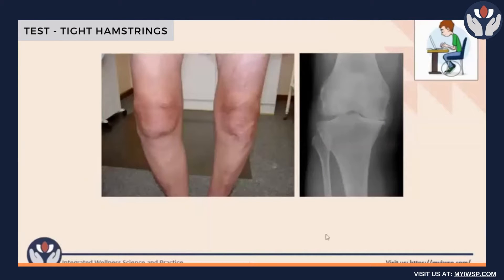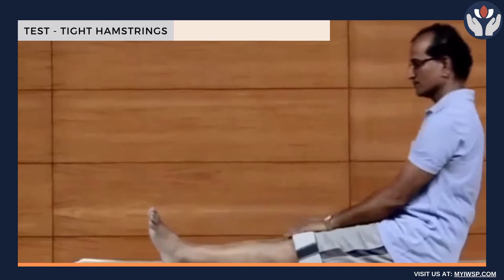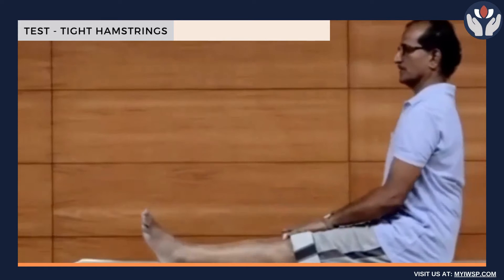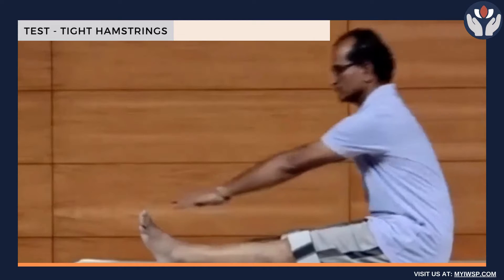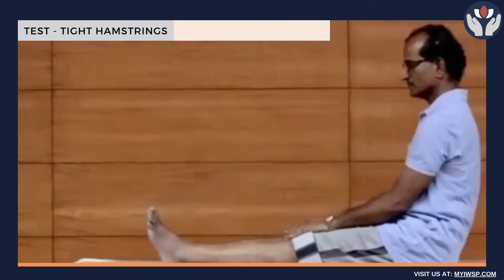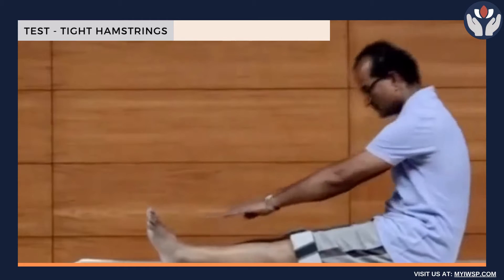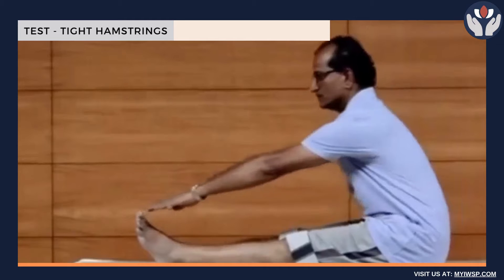Now, how to identify hamstring tightness: if you just sit down straight like that and your hamstrings or posterior structures are very tight, what is going to happen is when you bend forward, the bending will be only at the upper back here. You will be able to come up to here by bending only the dorsal spine.